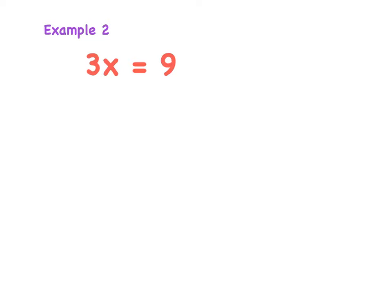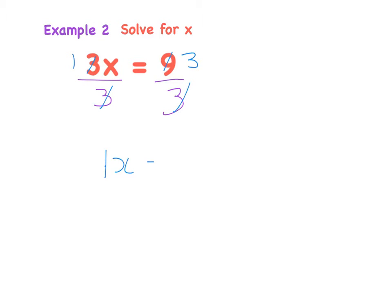The second example is 3x equals 9. 3x means 3 multiplied by x. The question says solve for x, which means I want to find out what x is — I do not care what 3x is. I'm going to sort out this 3 by dividing by 3. That would get rid of the 3. But what I do to one side, I must do to the other. 3 goes into 3 once, and 3 goes into 9 three times. So 1x equals 3, or x equals 3.